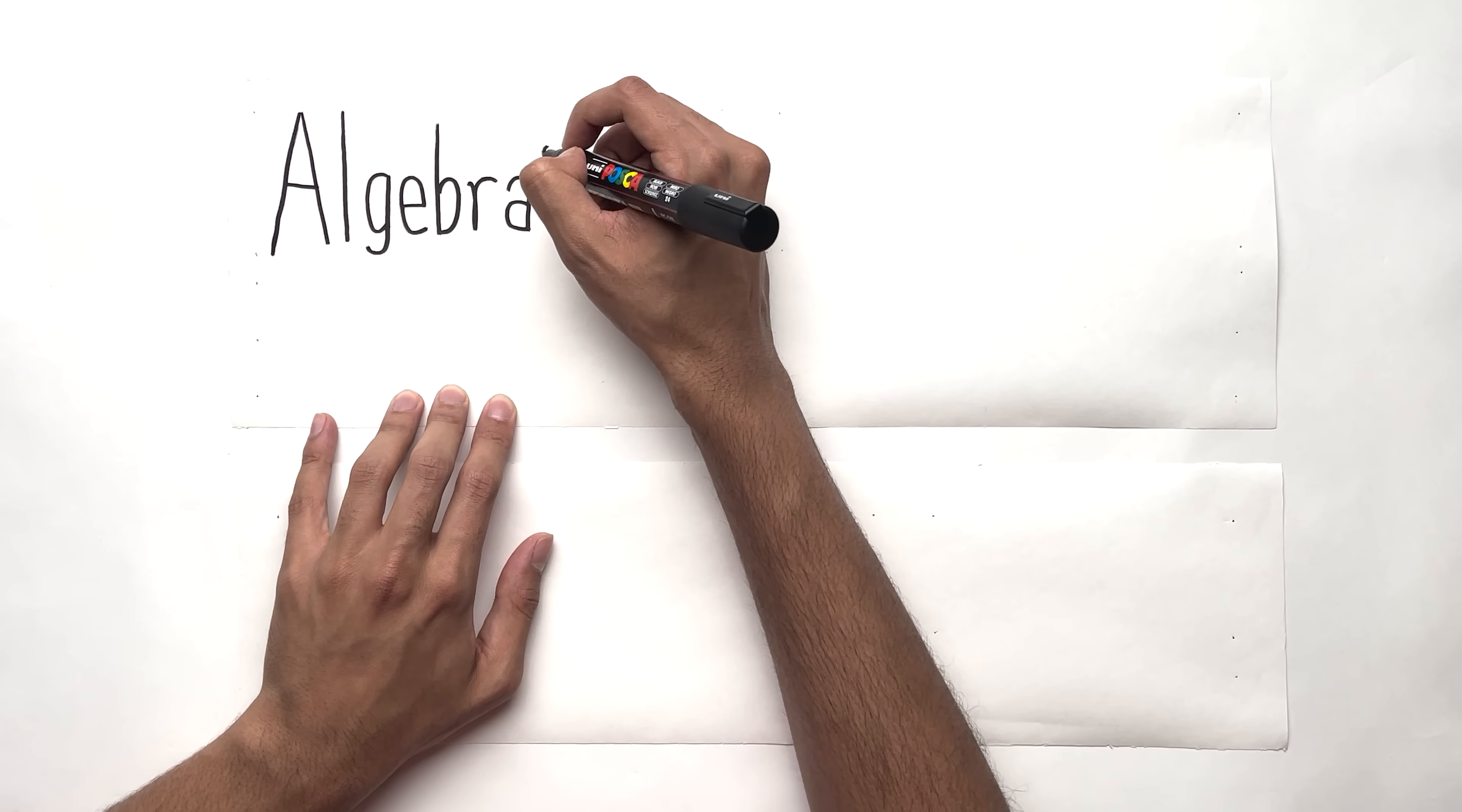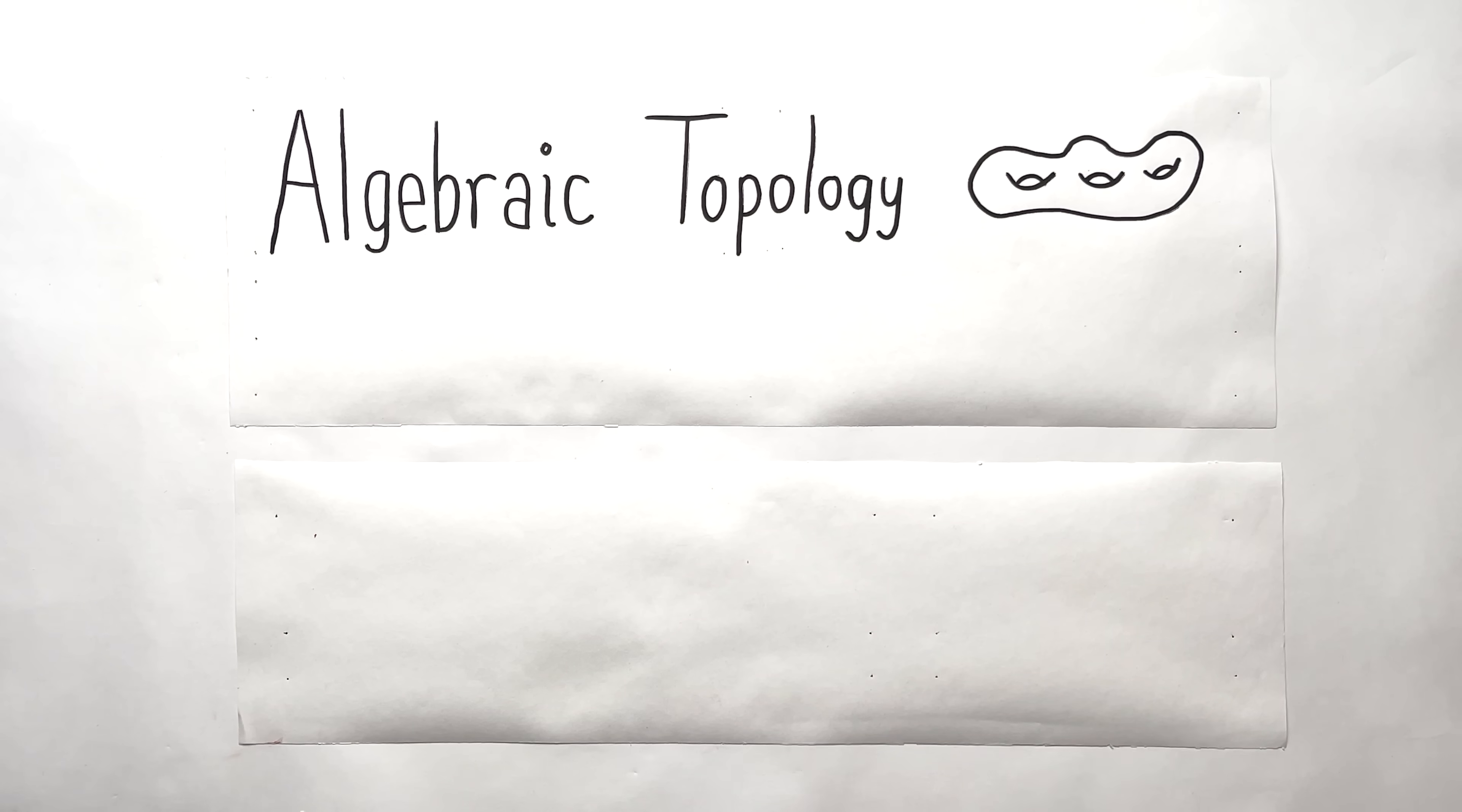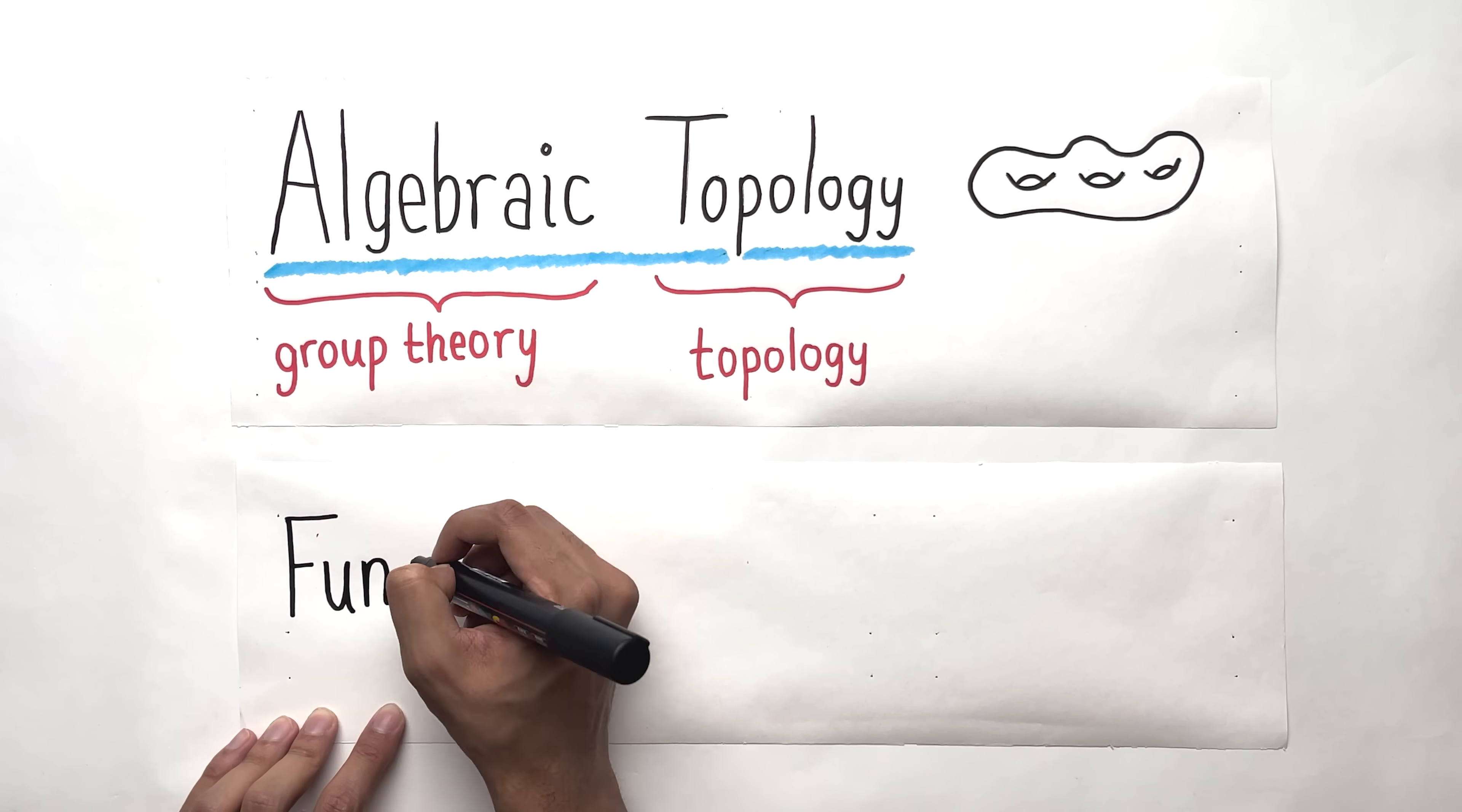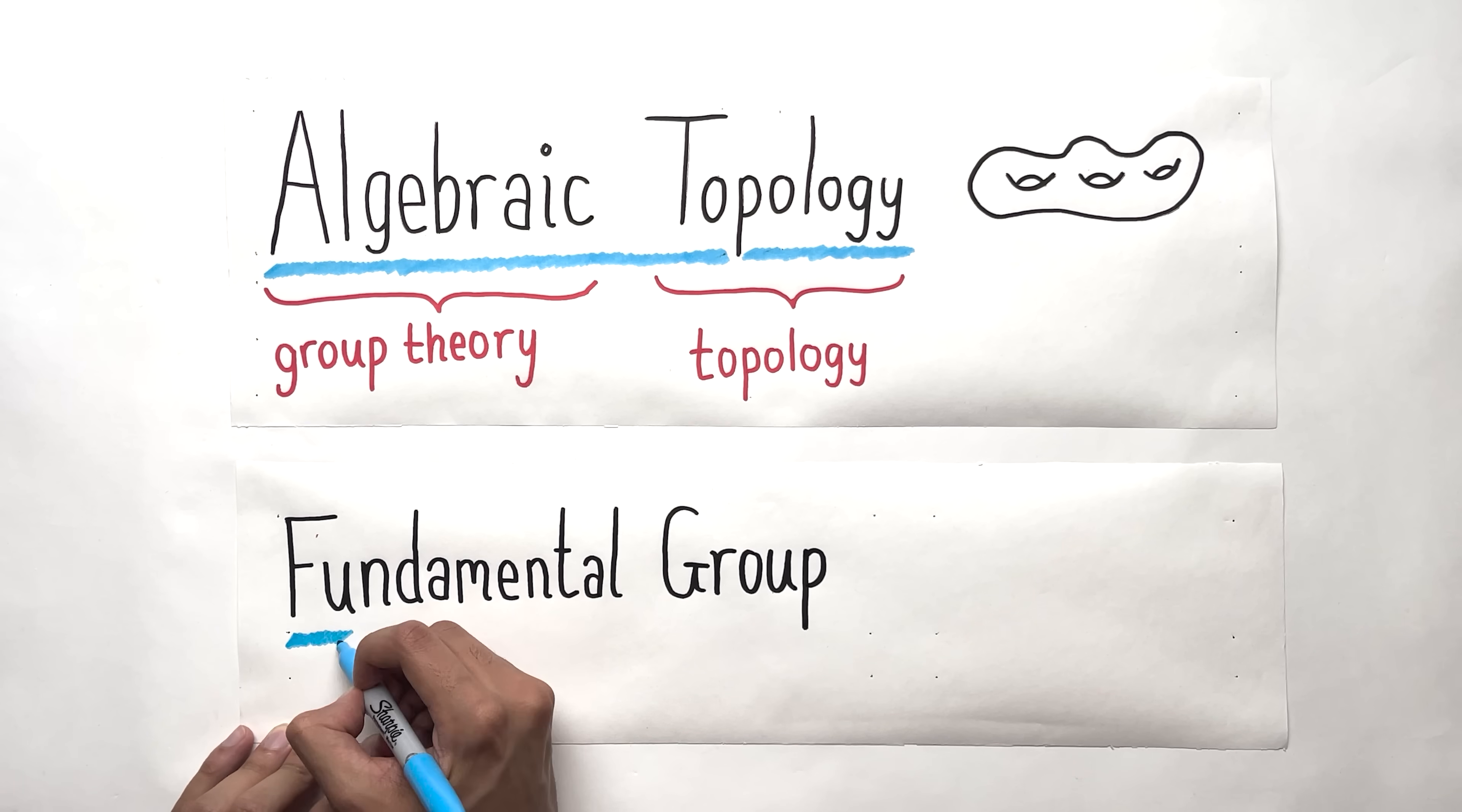In this video, we're going to answer this question by studying a field of math called algebraic topology. This field of math is, roughly, the intersection of topology and group theory. We'll specifically focus on a device called the fundamental group, which allows us to precisely detect when a space has holes.